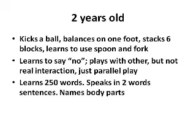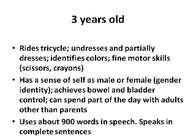By the time they're three, they should be able to ride a tricycle, undress and partially dress, identify colors, and have fine motor skills with their hands — using scissors and crayons. They have a sense of self as male or female — gender identity. This may become relevant later with gender dysphoria, which is a mental disorder specified in the DSM-5. They achieve bowel and bladder control and can spend part of the day with adults other than parents, so they no longer have separation anxiety or stranger anxiety. They should be able to use about 900 words in speech and speak in complete sentences.